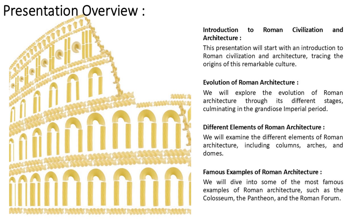In this video, we are going to be discussing about the evolution of Roman civilization and architecture, its origins and the evolution of Roman architecture through its different stages. Then we are going to be discussing about the Roman architectural elements such as columns, arches and domes, the famous examples of Roman architecture, and town planning as well. So let us deep dive into the PPT.